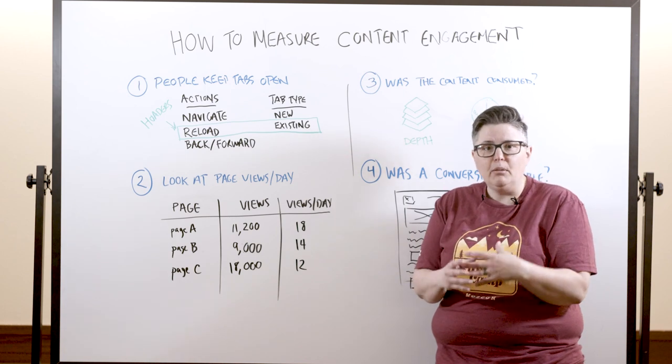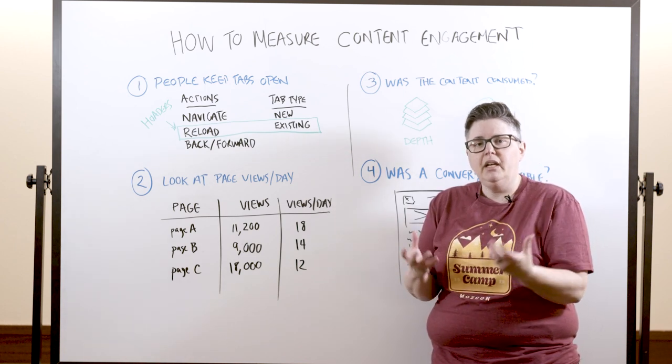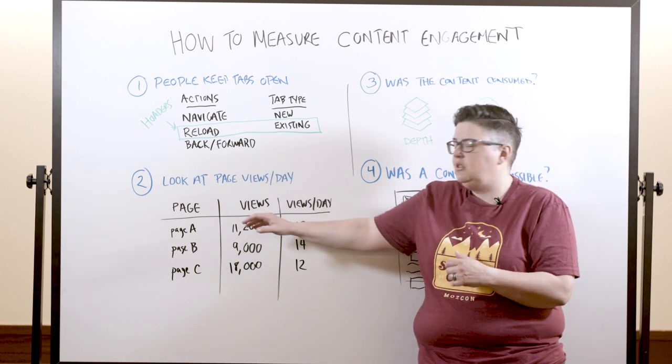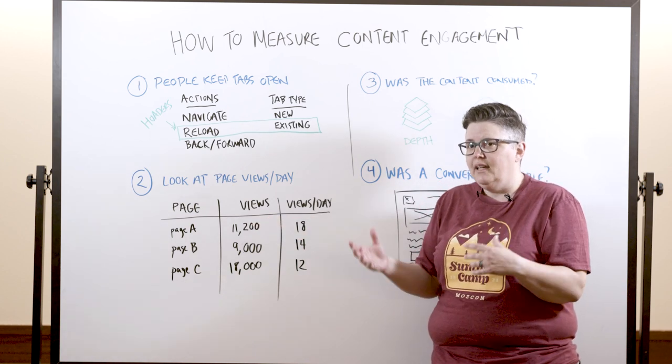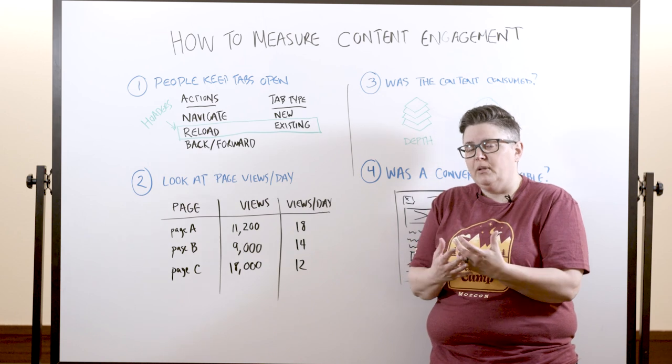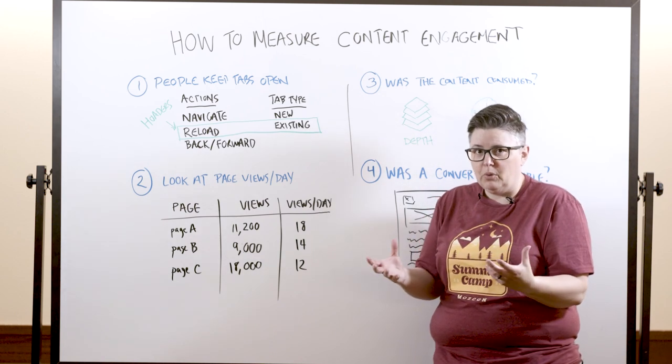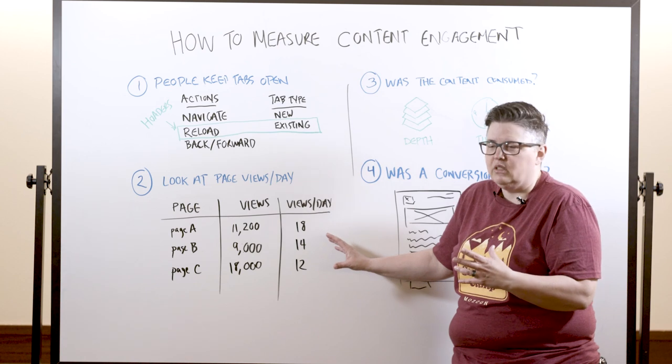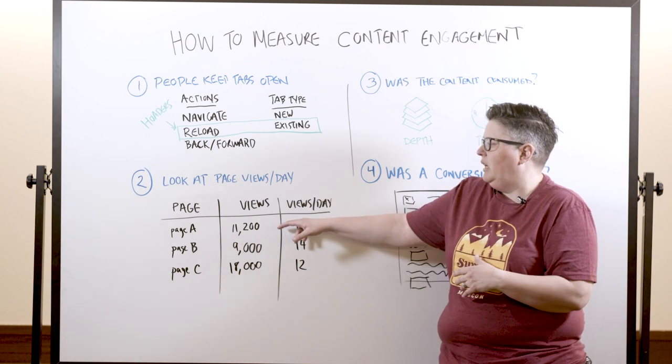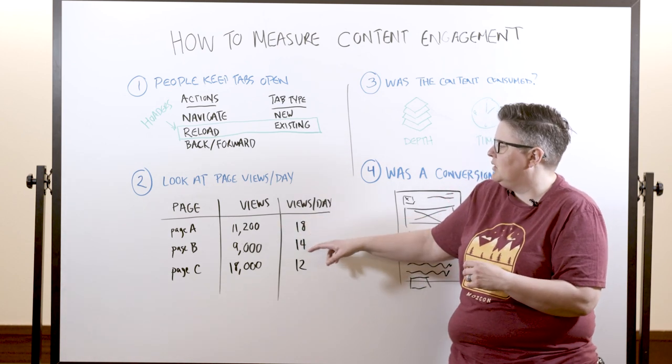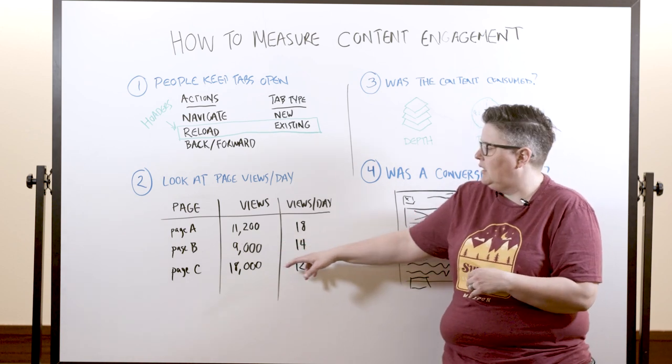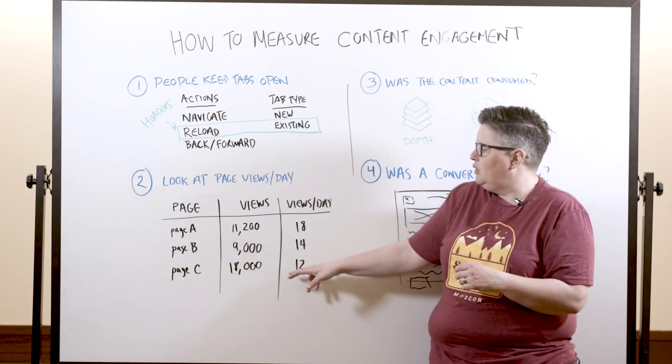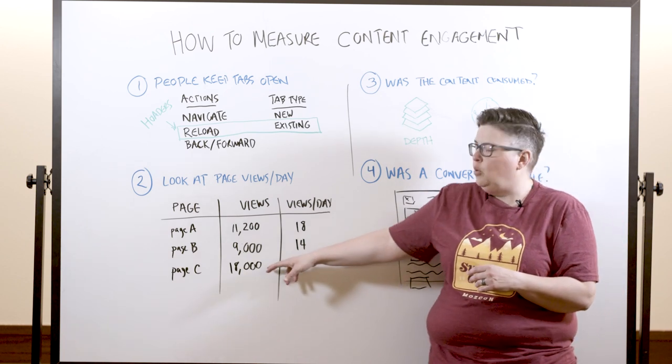So I want you to think about that. You can always capture the publish date of the page and then try having a report where you have the page, how many views that page has had since it was published, and then take the page views, divide it by the number of days that page has been around for, and then look at the page views per day. I've just sketched out an example here, you can see page A, 1,200 views, 18 views per day. Page B, 9,000 views, 14 views per day. Page C, 18,000 views, but only 12 views per day because this is an older post.